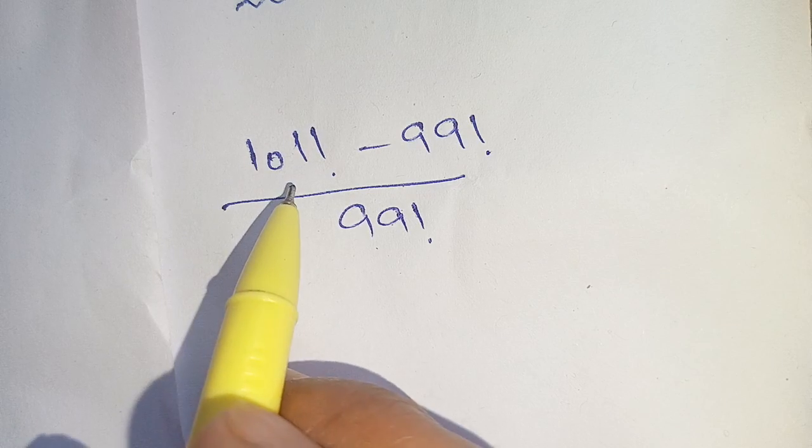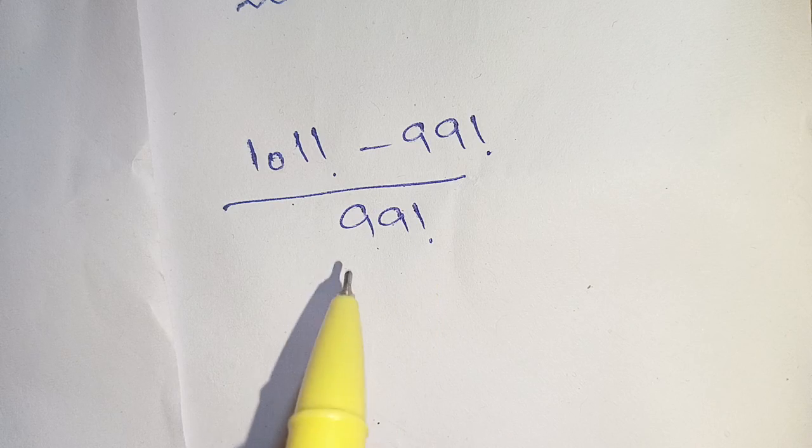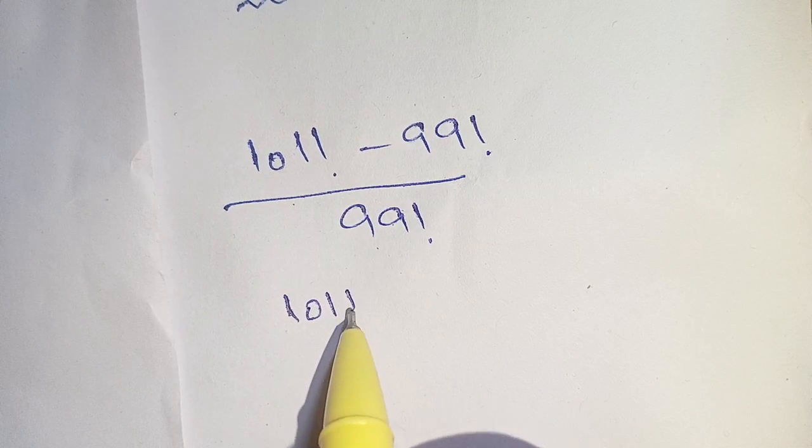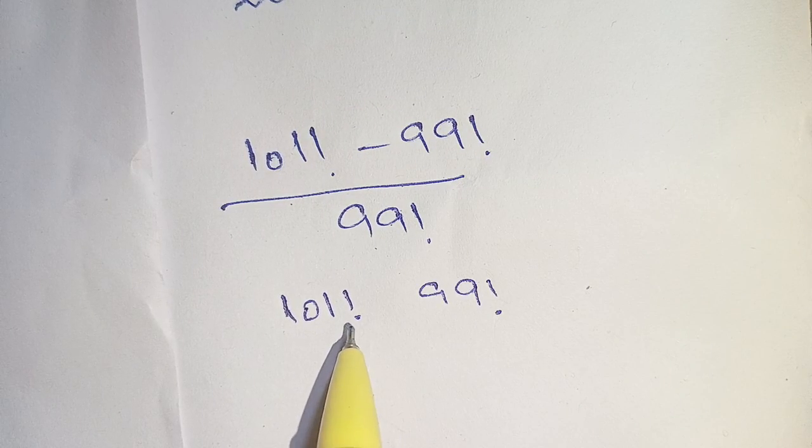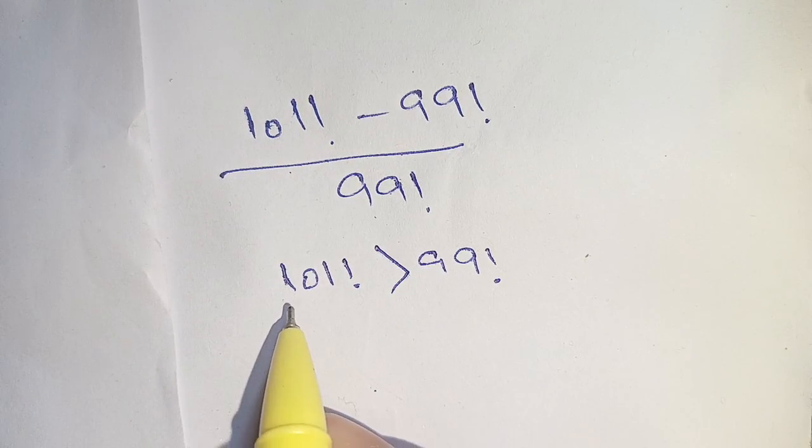Hello everyone, how to solve 101 factorial minus 99 factorial divided by 99 factorial? Let us solve this. Here are 101 factorial and 99 factorial. We know that 101 factorial is greater than 99 factorial and we can reduce 101 factorials in terms of 99 factorial.